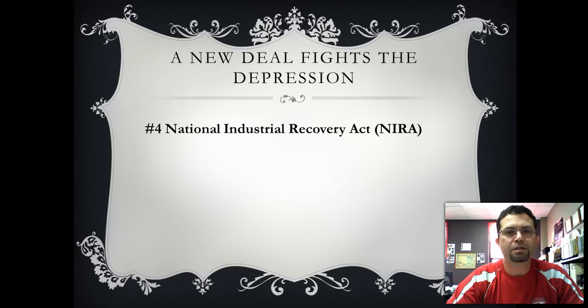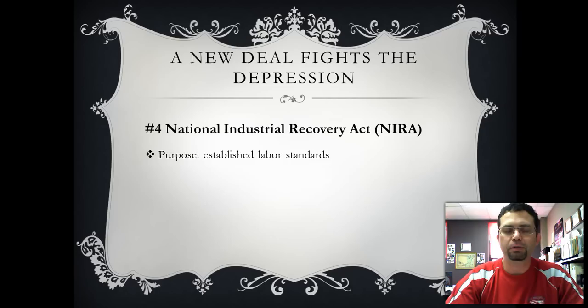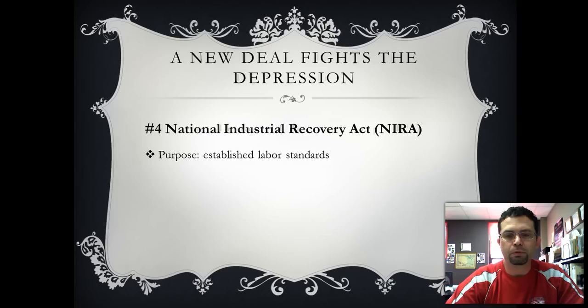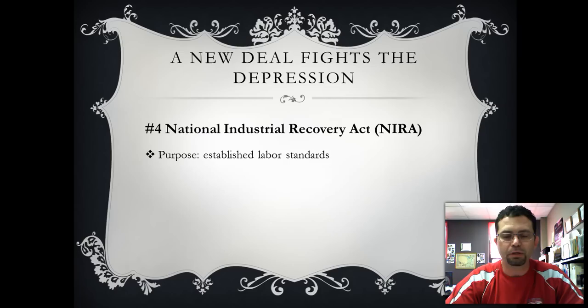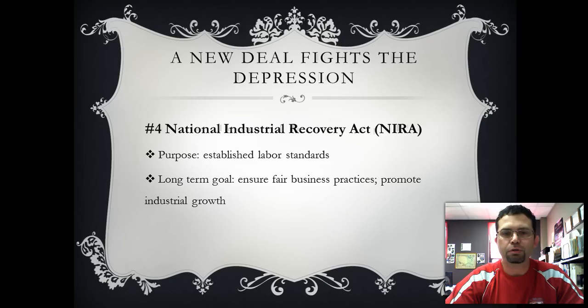Number four in your notes is the National Industrial Recovery Act. The NIRA created several job programs — programs like the PWA, the CWA, and the NRA, which will come up later in this lesson. The NIRA established labor standards, allowing industries to be more equitable and eliminate the gap between the wealthy and the poor — what we call today the 1%, where 1% of our population controls 99% of the wealth. The long-term goal was to ensure fair business practices and promote industrial growth.